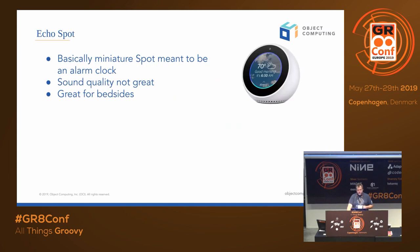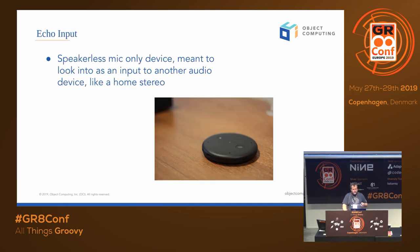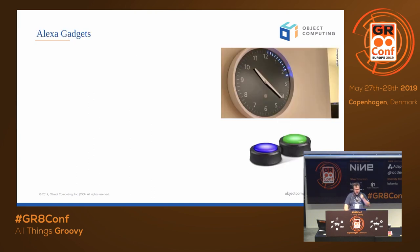The Echo Spot I have as my alarm clock at home — it's also got a screen, but much tinier. The sound quality isn't very awesome but it works good for an alarm clock. The Echo Input has no speaker whatsoever — just microphones — and you can get those for under $20. If you want to use your home stereo for everything, you can just plug this in as an input and it'll always sound good.